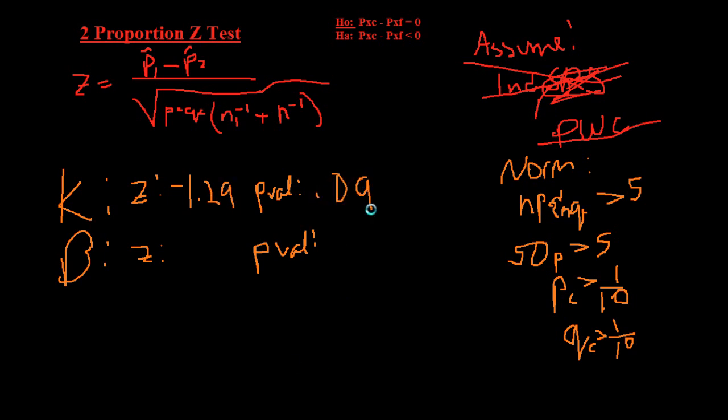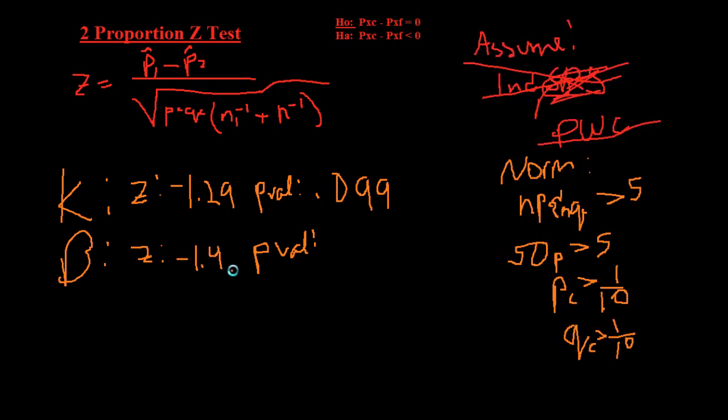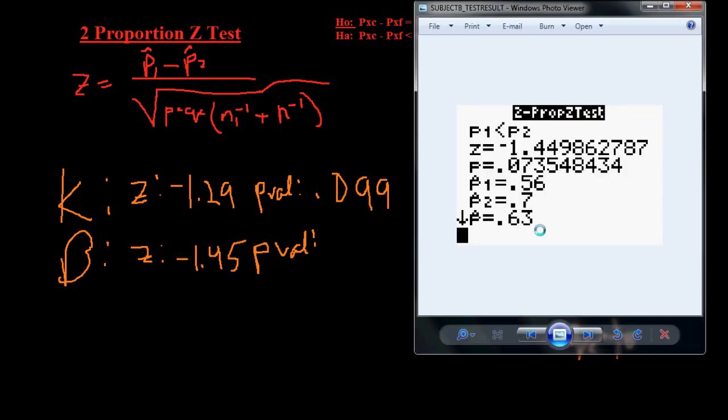And then for subject b, the z-score of negative 1.45 and a p-value of 0.073.